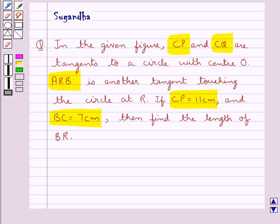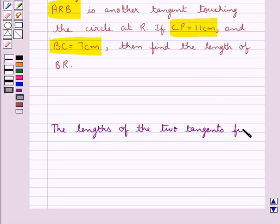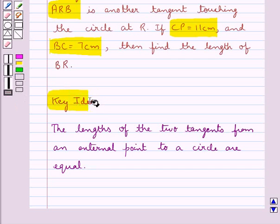Let's recall one result which says that the lengths of the two tangents from an external point to a circle are equal. This is the key idea that we use for this question. Let's proceed with the solution now.